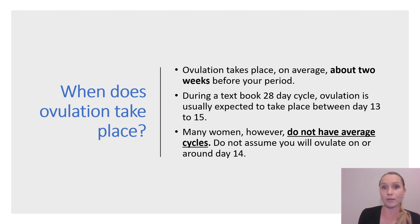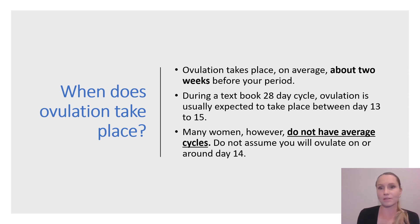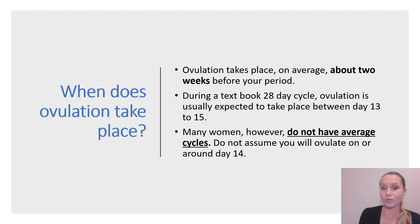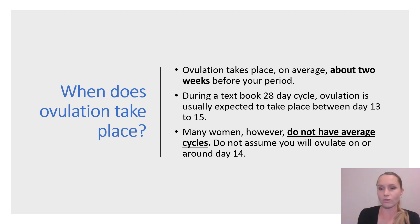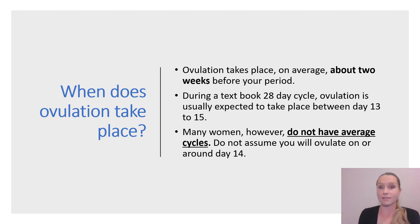During a textbook 28-day cycle, ovulation is usually expected to take place between cycle days 13 to 15. Based on this guideline, many women are taught to expect, incorrectly if their cycle's not a textbook cycle, that ovulation will happen on around day 14 of their menstrual cycle. But many women, of course, don't have average cycles, and even those who usually do have a textbook cycle will see irregularities from time to time. So do not assume you will ovulate on or around day 14. As you chart your cycles, you're going to see where you do ovulate — you might be surprised that you ovulate quite early or much later than you expected.